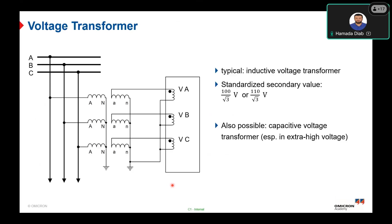Now we will talk about the second instrument transformer: the voltage transformer. The voltage transformer transforms the primary voltage to a small secondary voltage that can be monitored by the protection relay. A typical example is the inductive voltage transformer, which uses an inductive iron core to transform primary values to small secondary values that can be handled by the protection relay.